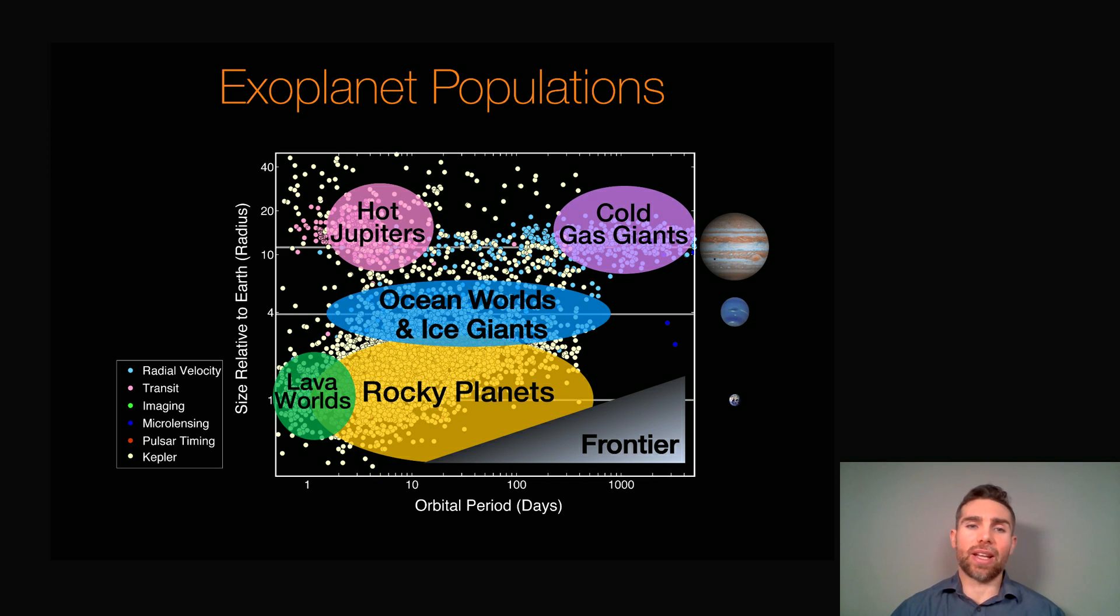So there's lots of different sorts of planets that we've discovered so far, lots of different categories and types. Hot Jupiters are the big ones close to stars. They're hot because they're close to their star. They're Jupiters because they're big. You've got cold Jupiters, cold gas giants. You've got ocean worlds, ice giants a bit like Neptune, things like that.